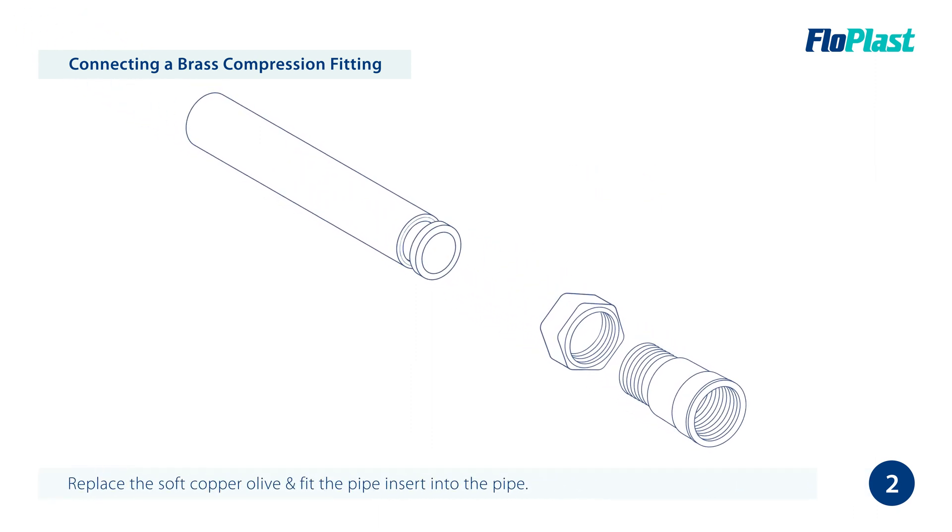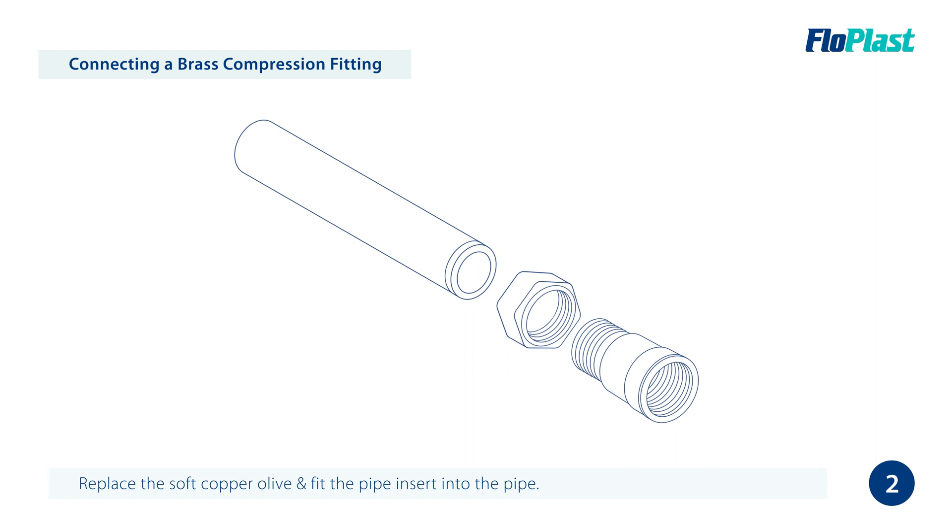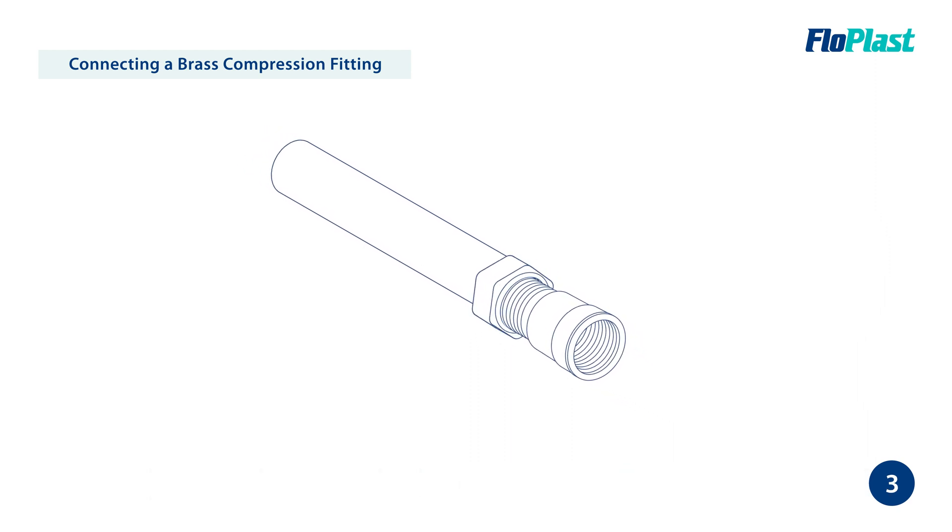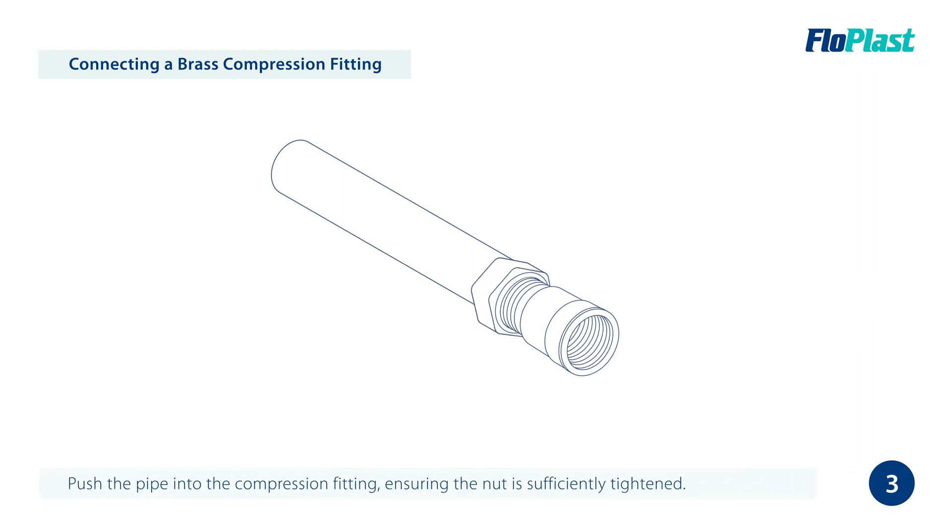Fit the pipe insert into the pipe ensuring it is fully inserted. Now push the pipe into the compression fitting. Finally, ensure the nut is sufficiently tightened using a suitable tool.